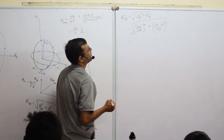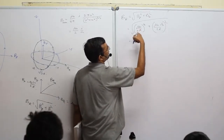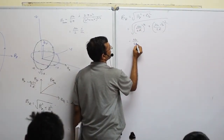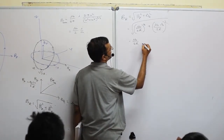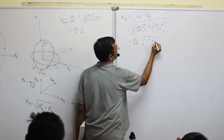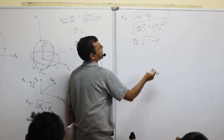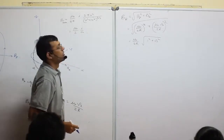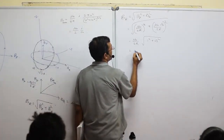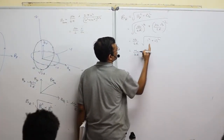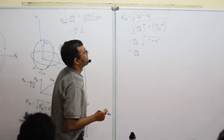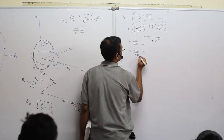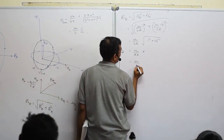Taking μ₀/2R common: inside the square root we have 1 + 3 = 4, so √4 = 2. The 2 in the numerator and denominator cancel, giving B_R = μ₀/R. Since μ₀/4π = 10⁻⁷, we have μ₀ = 4π × 10⁻⁷, so the answer is 4π × 10⁻⁷ / R.